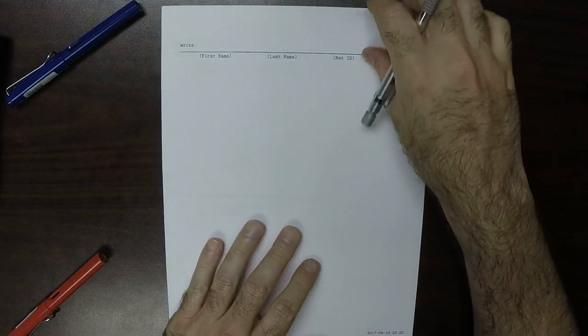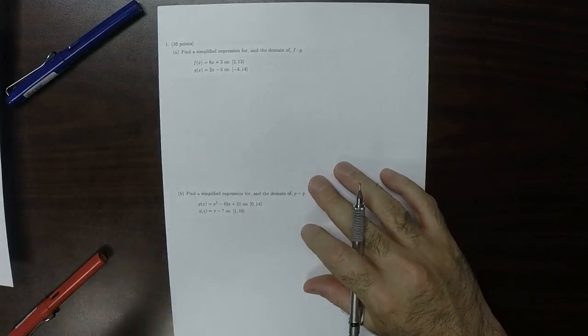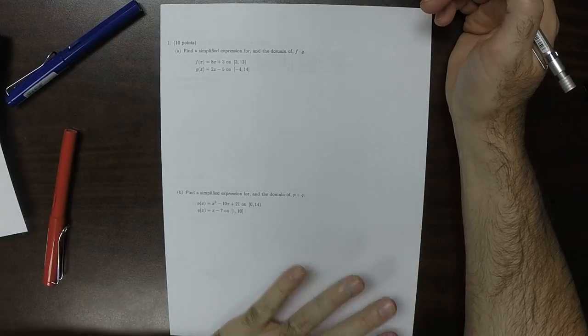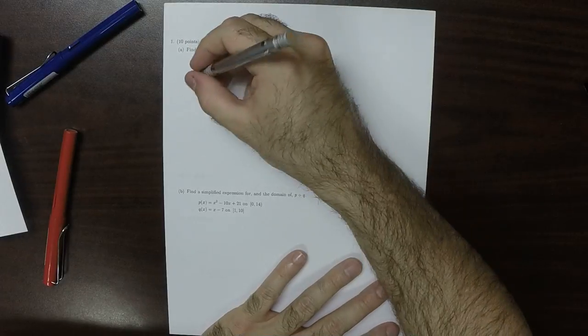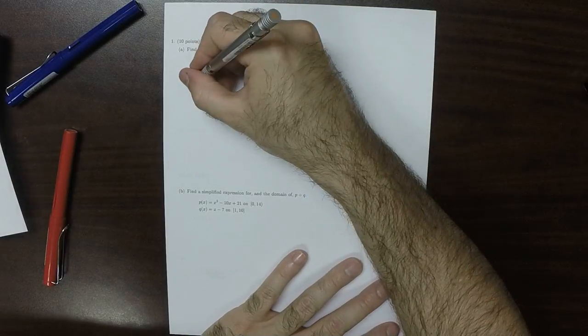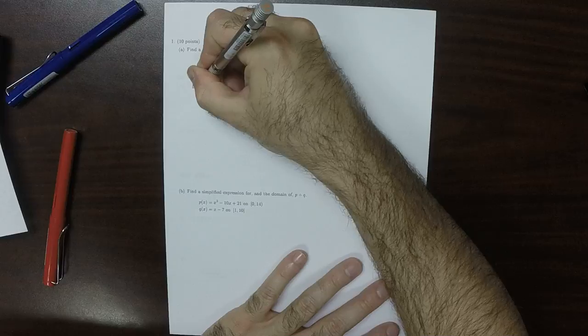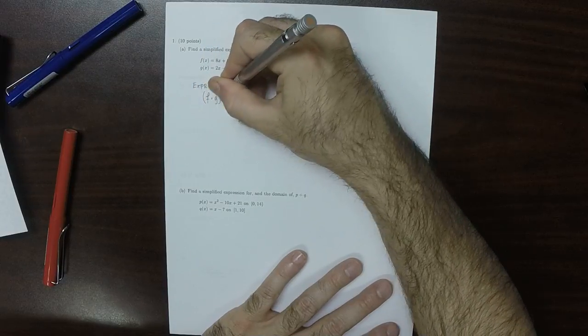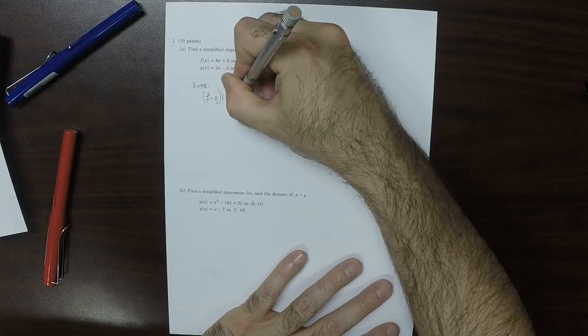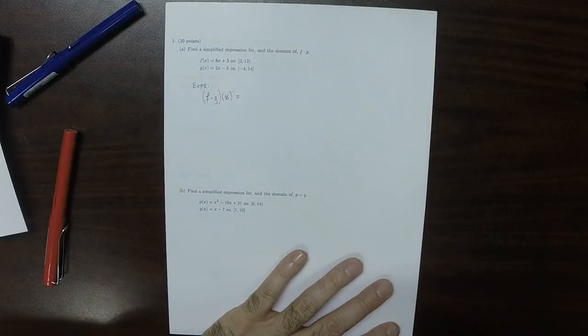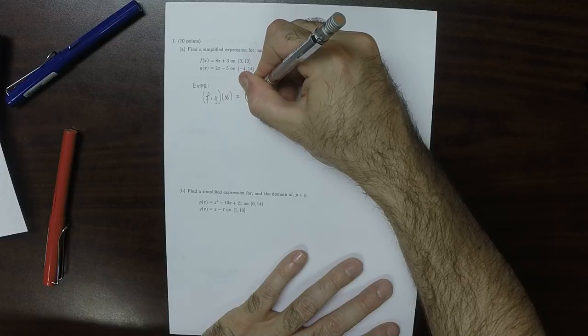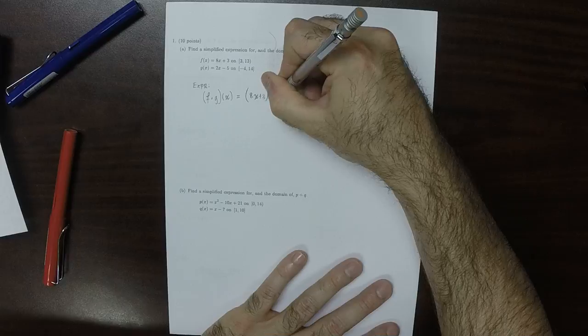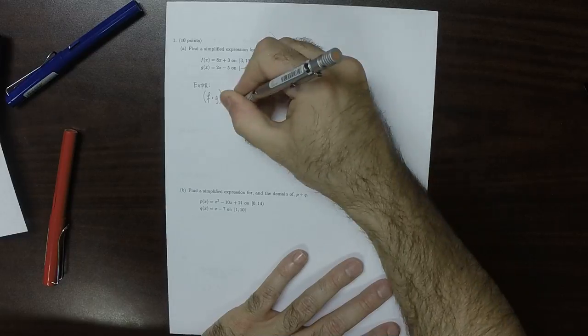This is the solution to quiz 11. So the product function for the expression, the product function evaluated at x, well, that is 8x plus 3 multiplied by 2x minus 5, and then carry out that product.